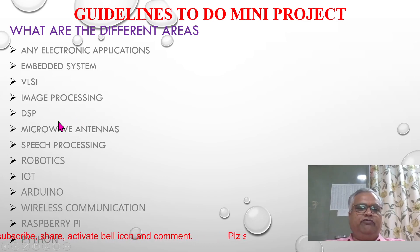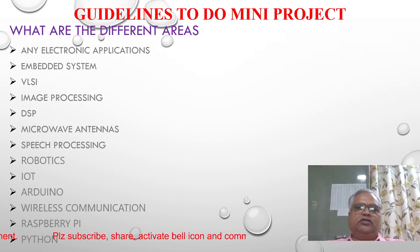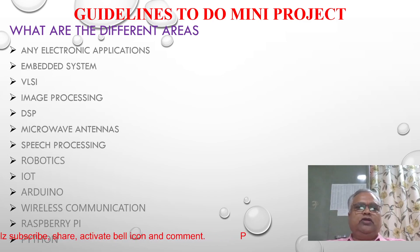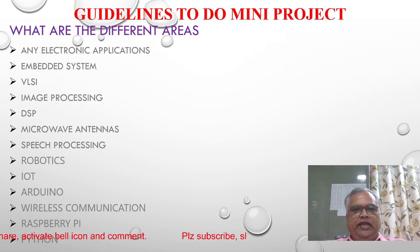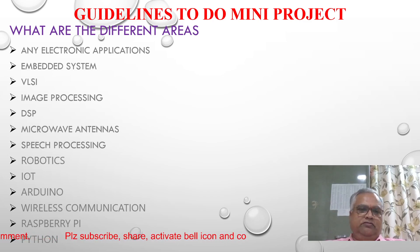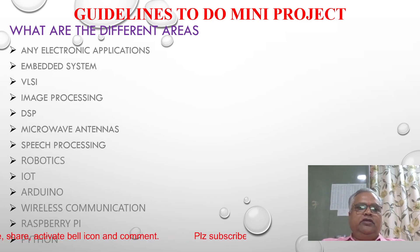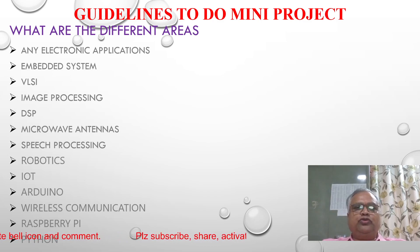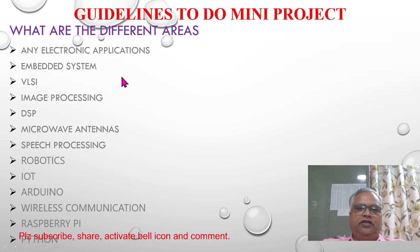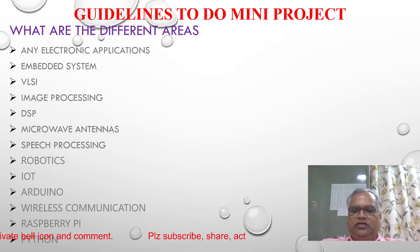Some projects are purely software, some are purely hardware, and some are a combination of both. For many projects, first preference is given to hardware, which contains discrete components and ICs. Second preference is given to a combination of hardware and software. Third preference is given to pure software. This is because examiners should be able to physically see the components — that is why hardware gets first preference.